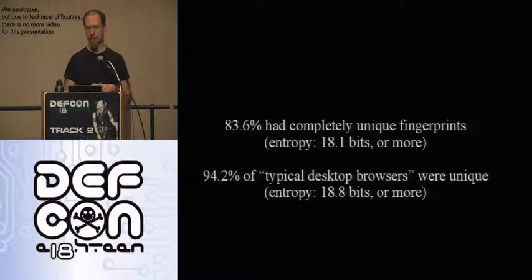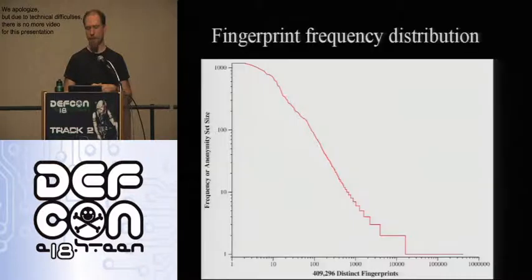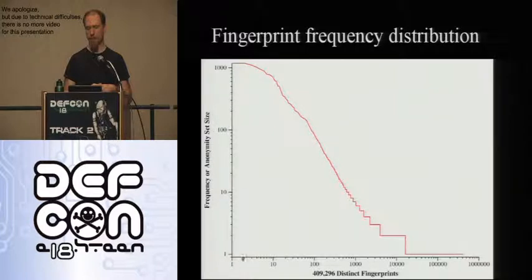Turned out people were really unique. 84% of the browsers that came to our test site were completely unique in the dataset. If you look only at browsers with Flash or Java installed — the relevant set for desktop browsers — uniqueness goes up to 94%, and only 1% had a fingerprint we saw more than twice. This graph shows the same result — note the log axes. Without log axes, the line would run along both axes with no visible structure. 84% of the data is in the tail — it's unique.